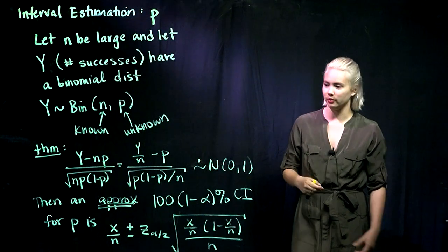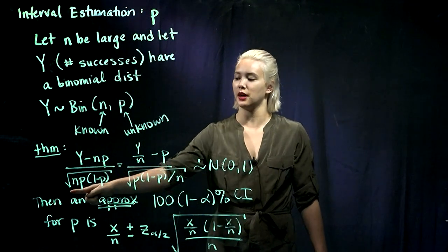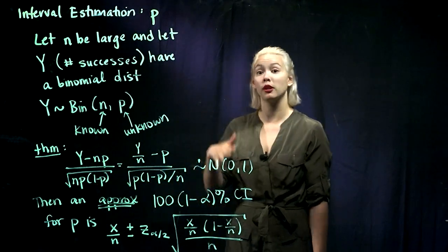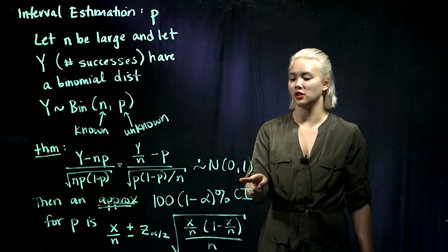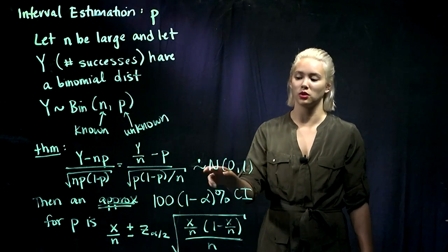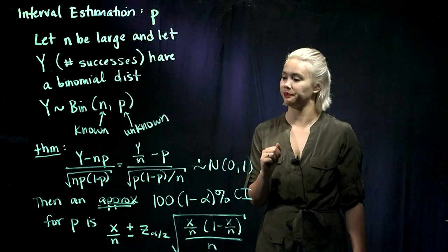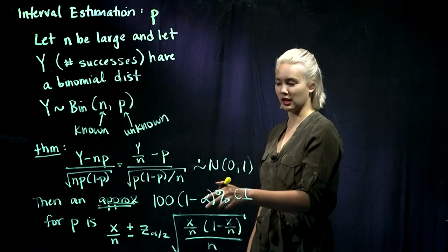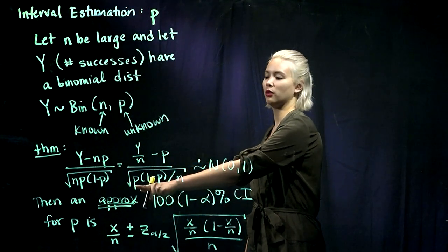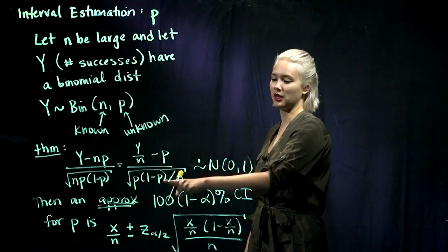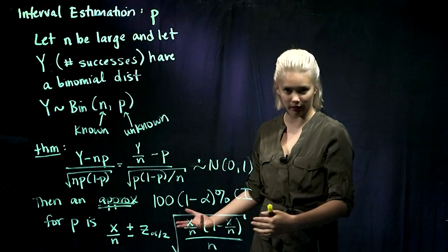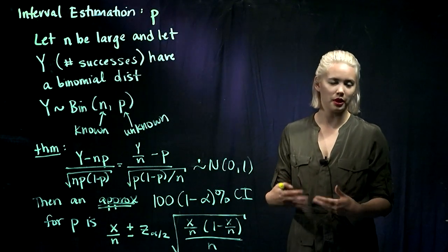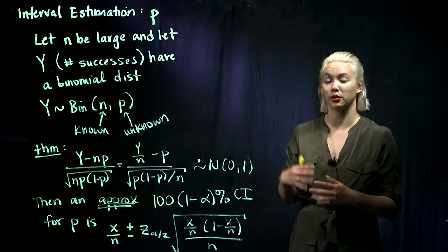Our central limit theorem tells us that y minus np divided by the square root of n times p times 1 minus p has an approximate normal distribution with mean 0 and standard deviation 1, so it's only an approximate distribution. We can rearrange this to write y over n minus p divided by the standard error, which is the square root of p times 1 minus p divided by n. Either way you want to write it, it'll have a standard normal distribution approximately.